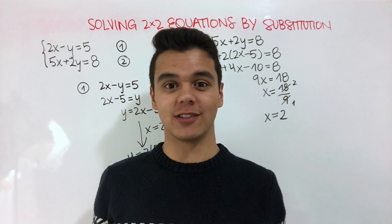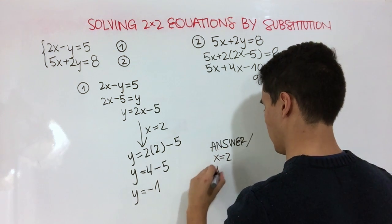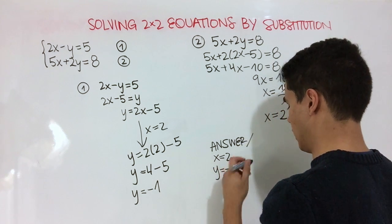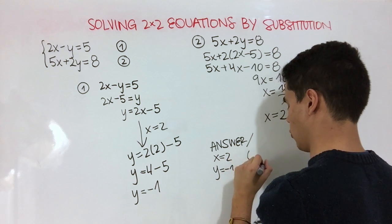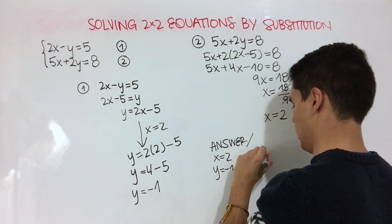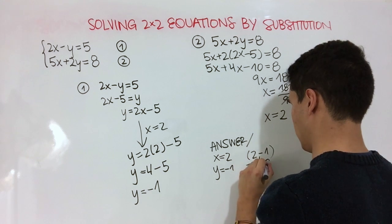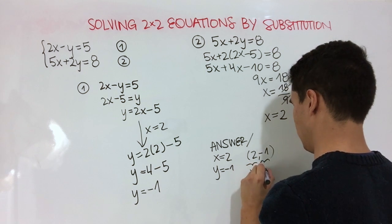Now it's time to write our answer down. We're going to say that x is equal to 2, and that y is equal to negative 1. Or if you just want to put it in point notation, it would be the coordinates 2 and negative 1, because we know that the first value is always x and the second value is y.